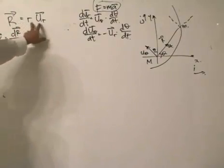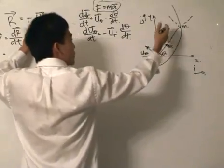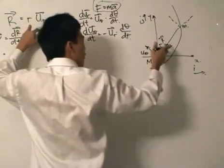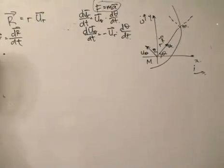Product rule remember it's a product. R is the scalar multiple or the magnitude of the mass of the sun to the earth. R changes, U_R also changes as the point move, product rule be careful.